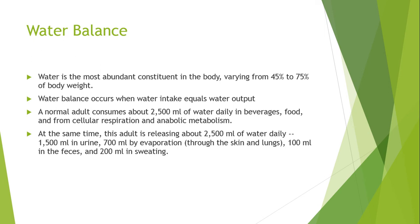A normal adult consumes about 2500 ml of water daily in different forms: liquid beverages, food, and also from the body's cellular respiration and anabolic metabolism, where water is produced as a byproduct. That same amount of water is then released in different forms — urine, evaporation via skin and lungs, feces, and sweating.